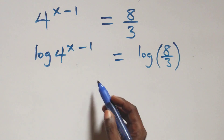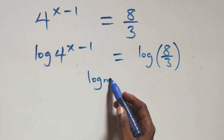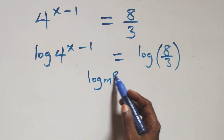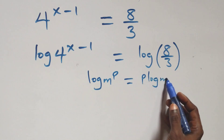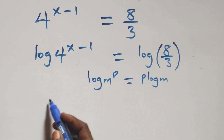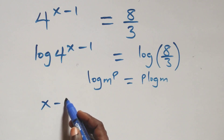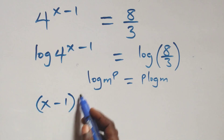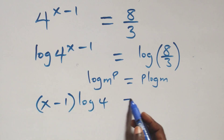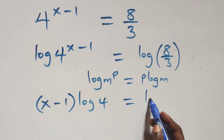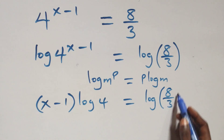We apply the power rule of logarithms: log of m raised to the power p equals p times log m. So this becomes x minus one times log 4 equals log of 8 over 3.